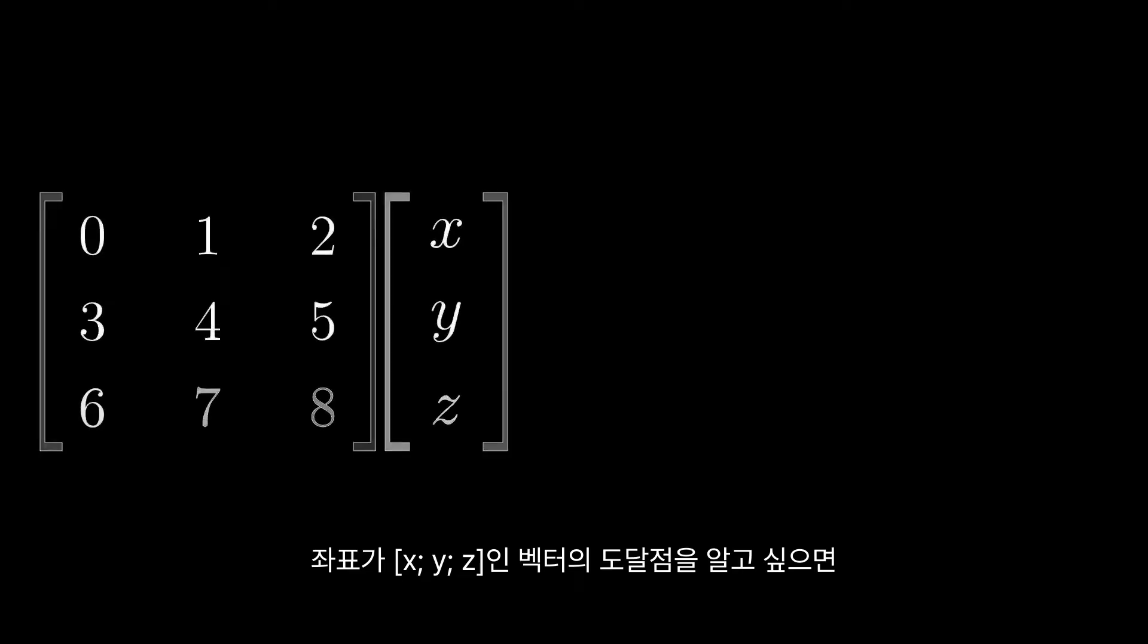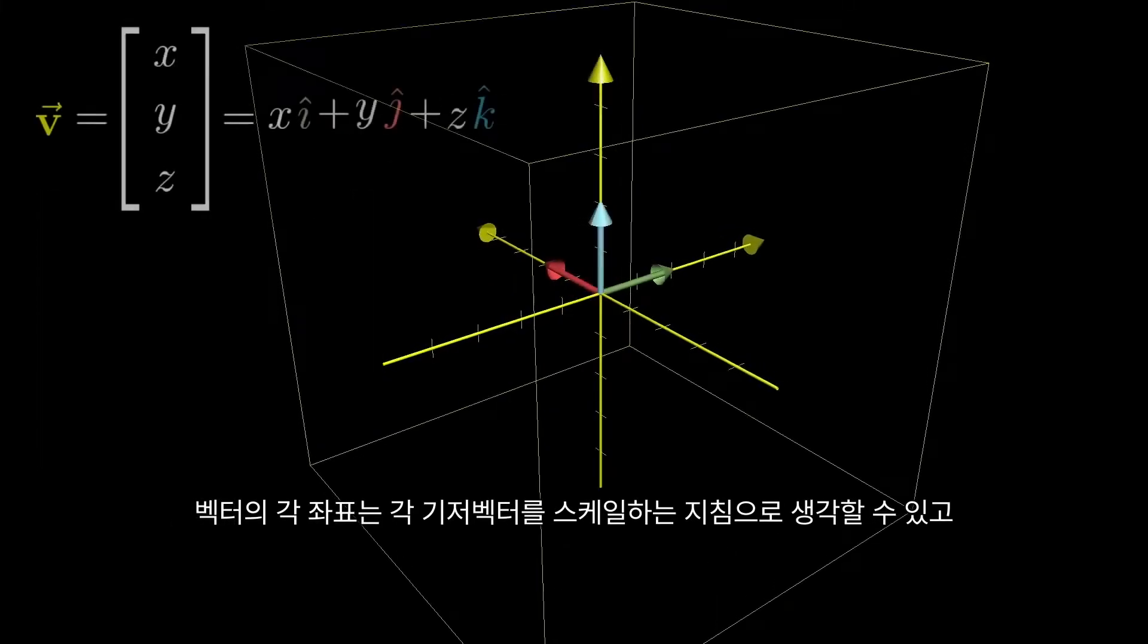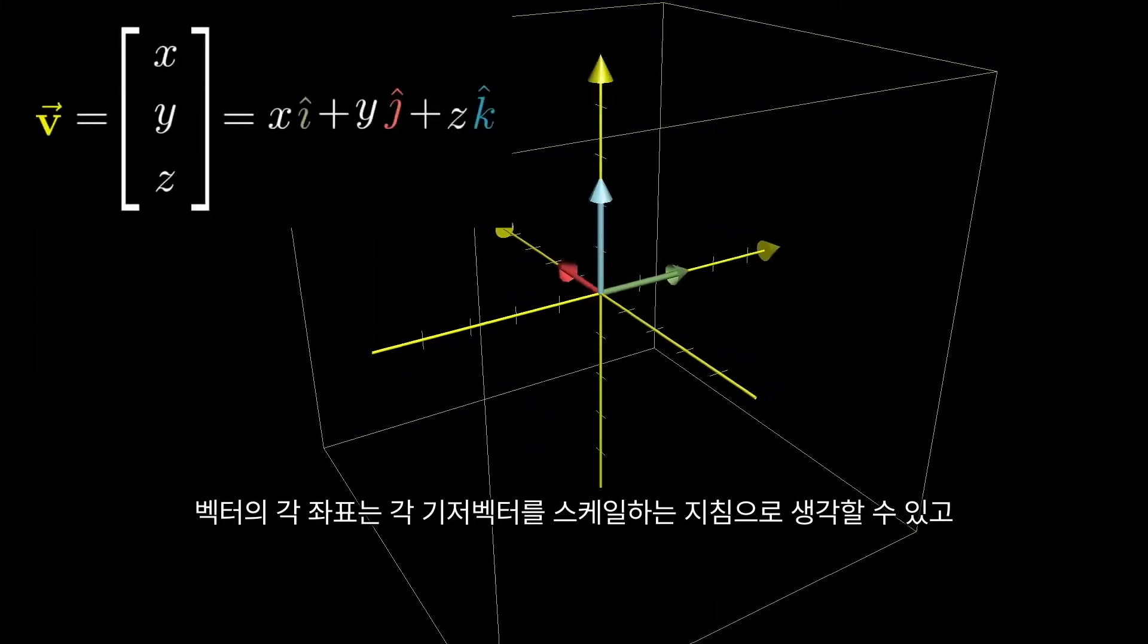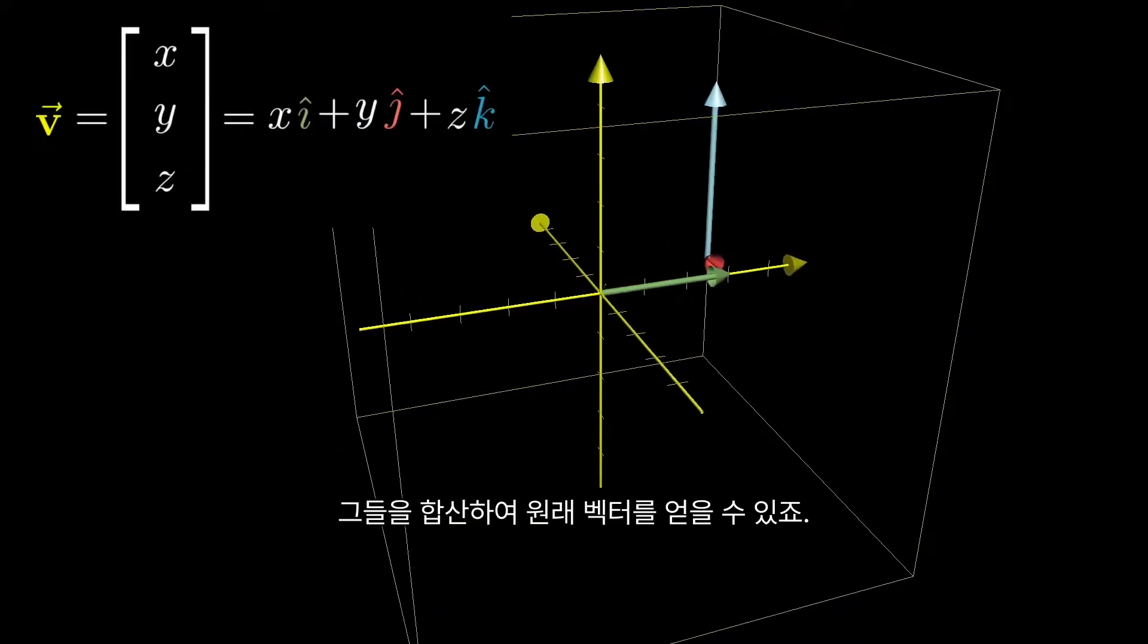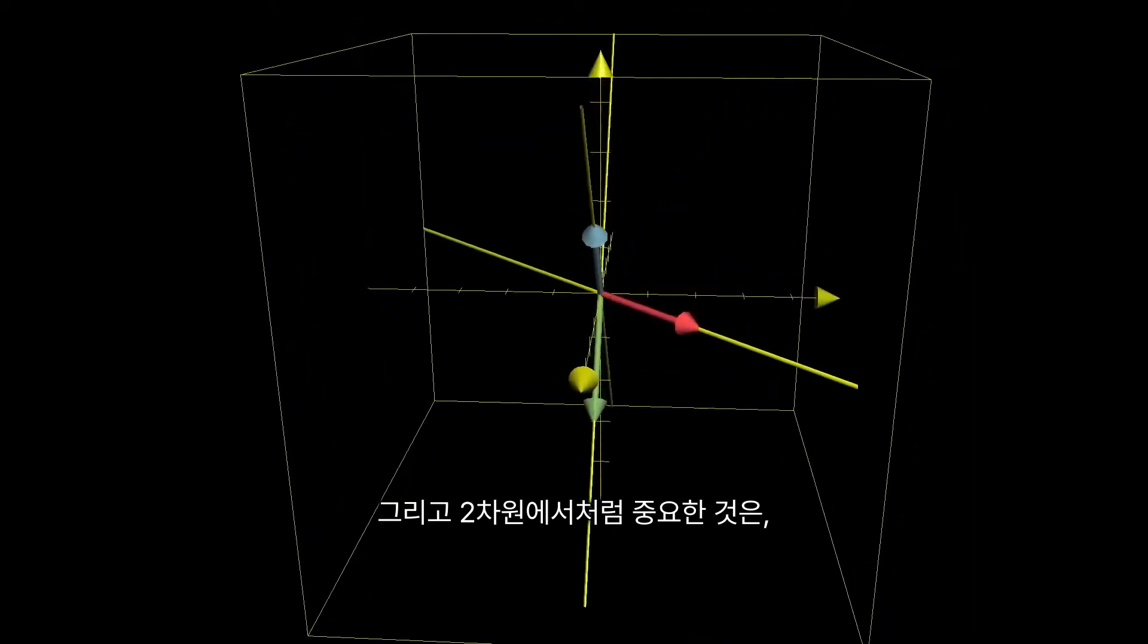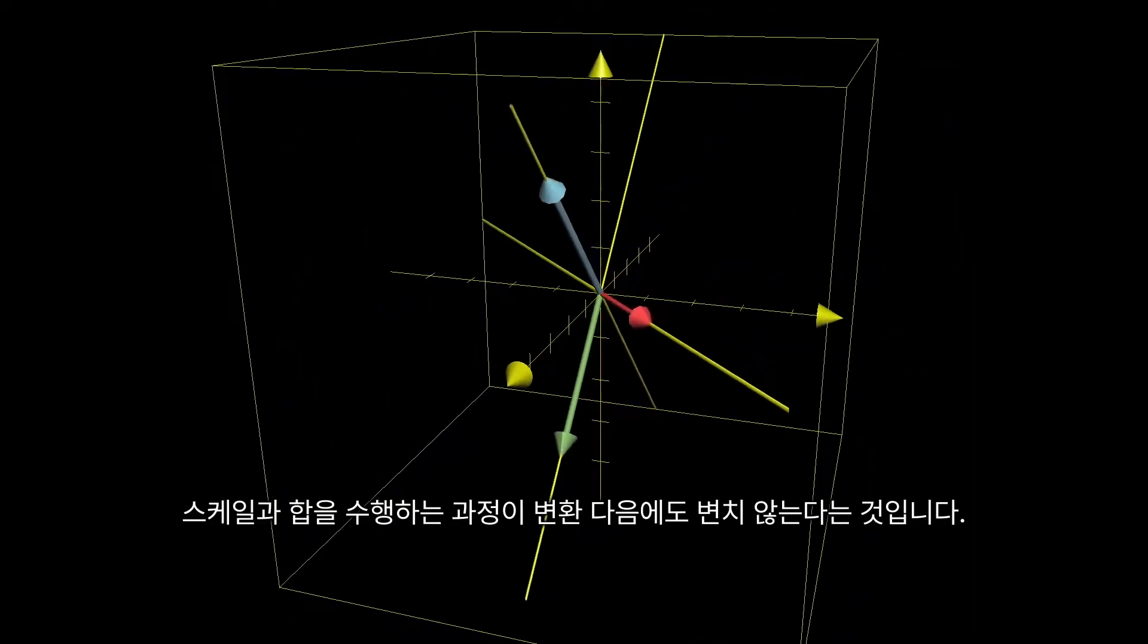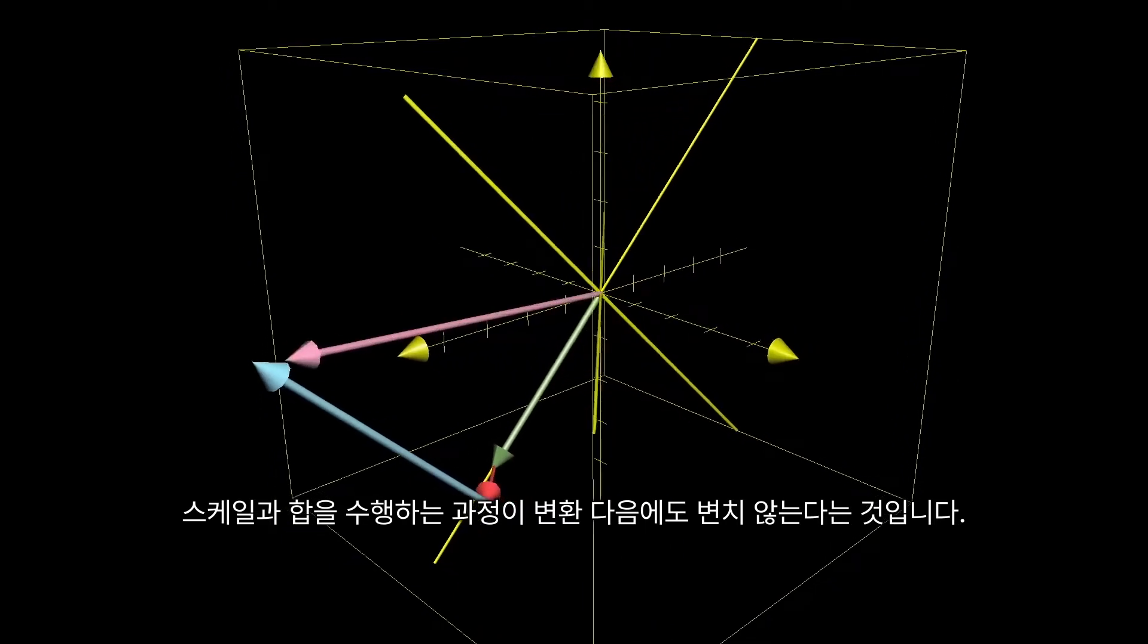To see where a vector with coordinates x, y, z lands, the reasoning is almost identical to what it was for two dimensions. Each of those coordinates can be thought of as instructions for how to scale each basis vector so that they add together to get your vector. And the important part, just like the 2D case, is that this scaling and adding process works both before and after the transformation.